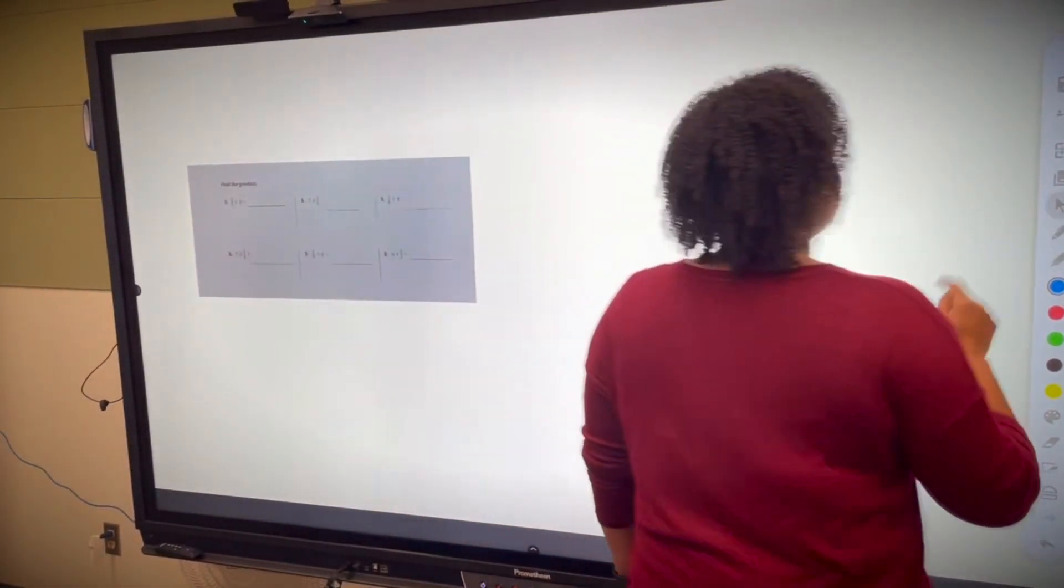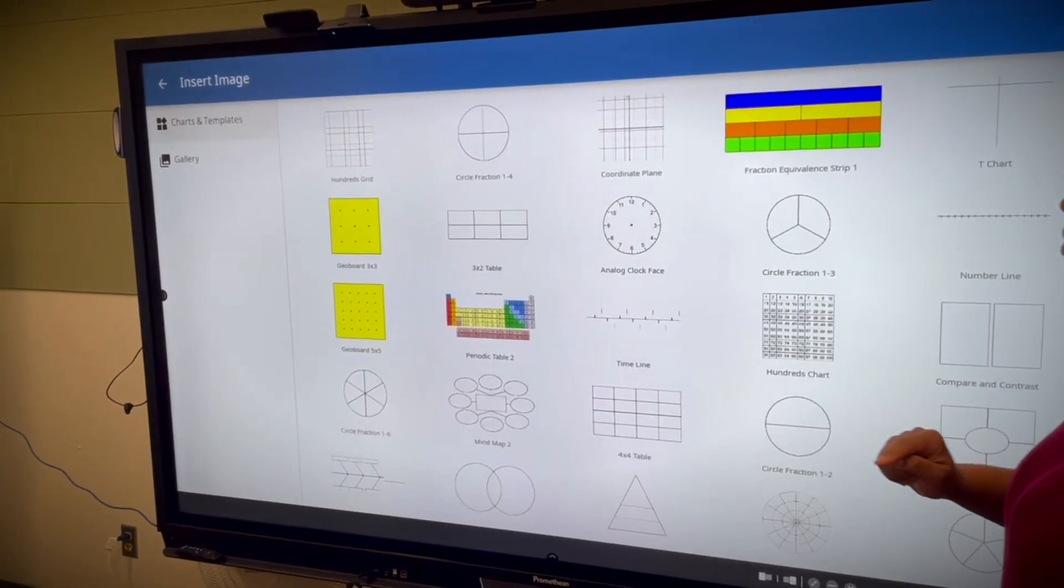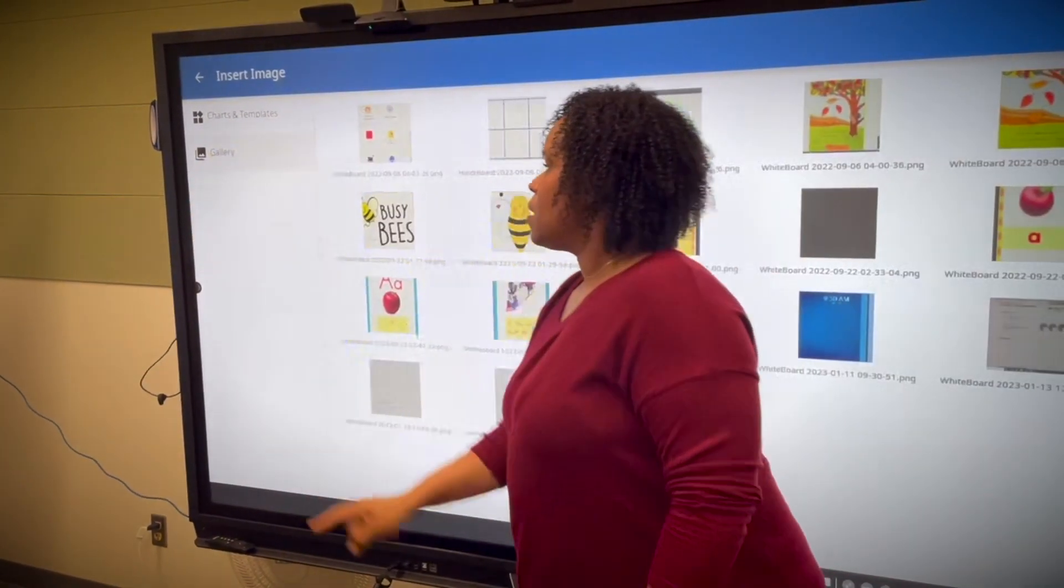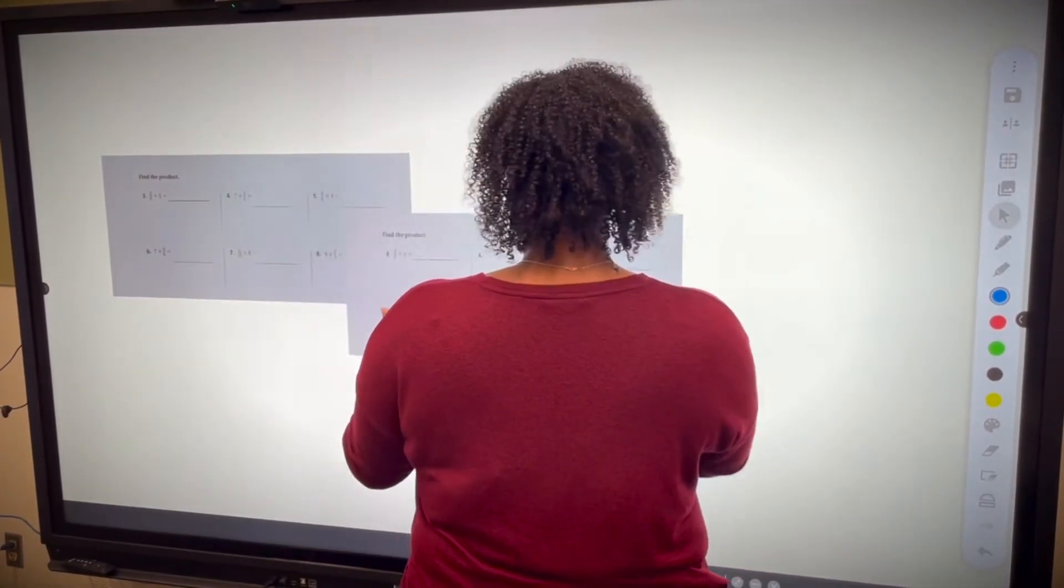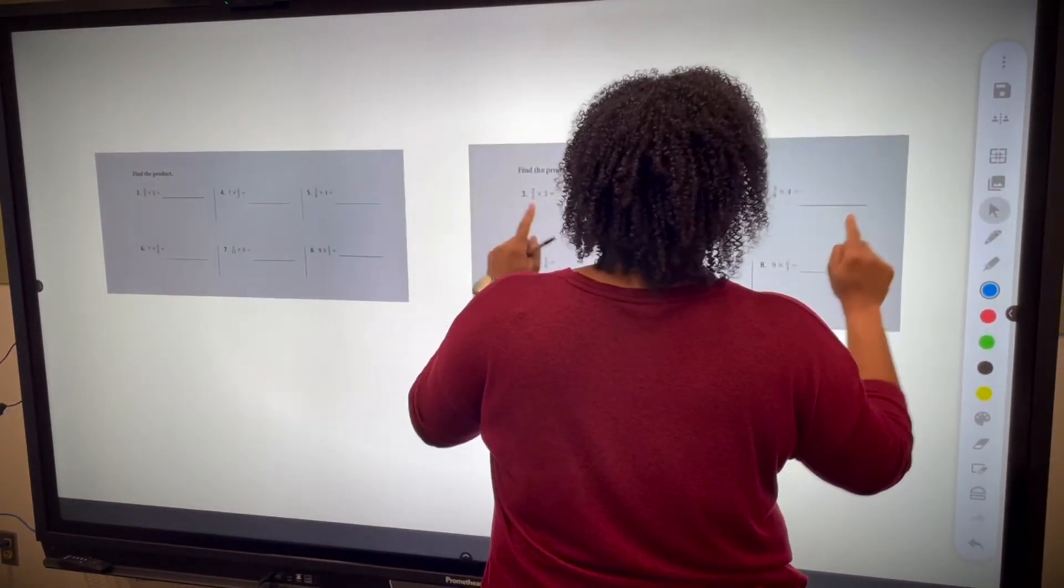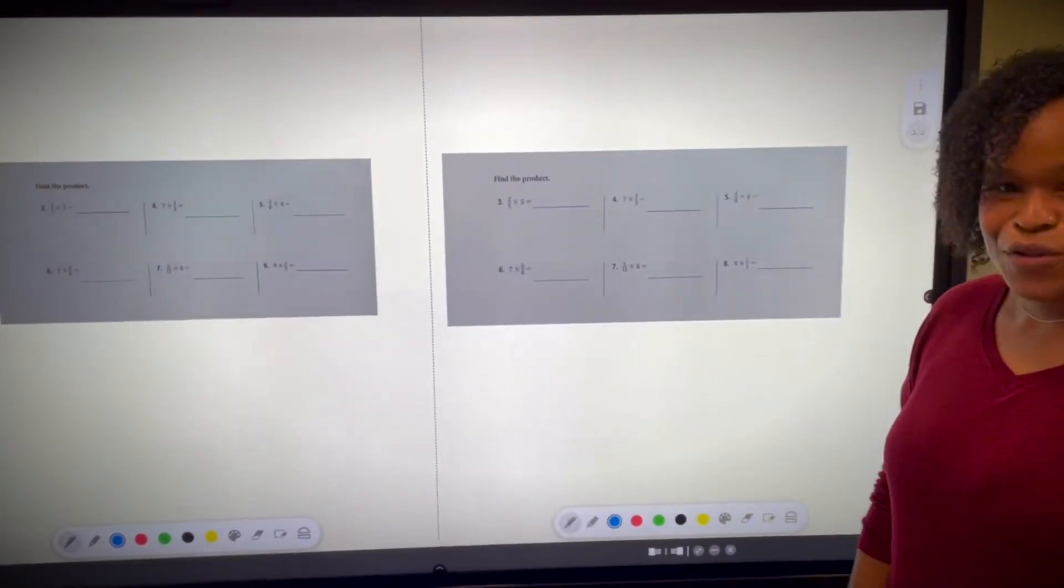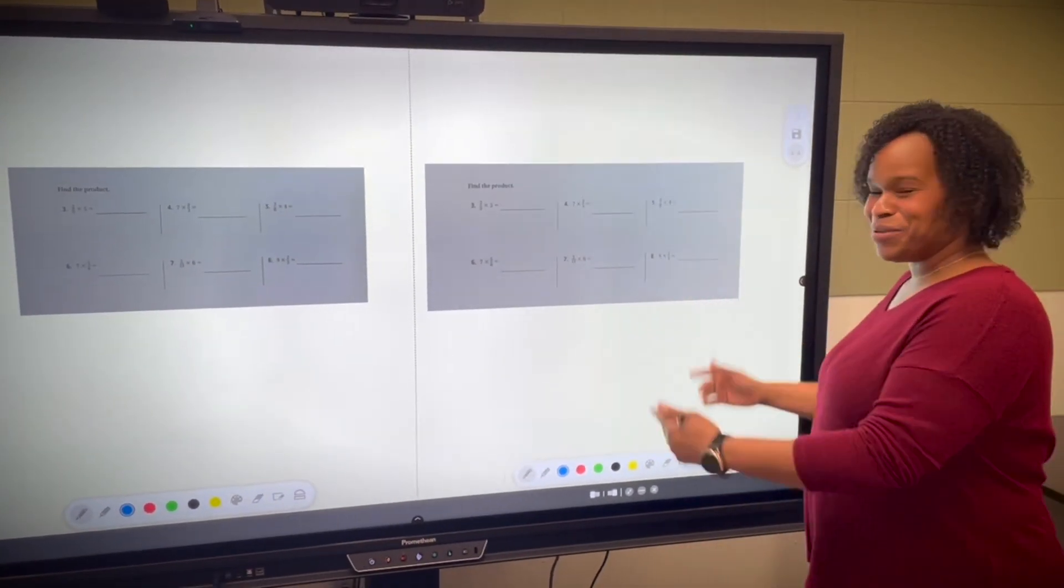So there's one copy. I'll come over here to my gallery, pull out the copy that I made, and now I can have two students come up to work together to solve the rest of the problems. And it's simple, just like that.